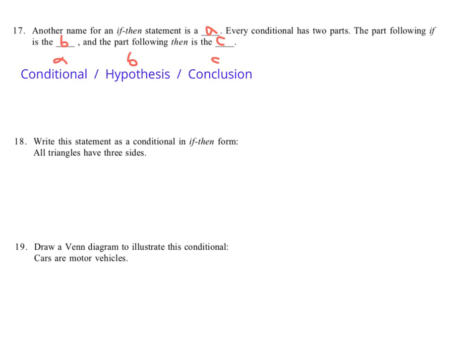Write this statement as a conditional in if-then form. All triangles - this is saying we know something to be true in all cases about triangles. All triangles have three sides. So you could write that as a conditional statement by saying, let me type it. If a figure is a triangle, then it has three sides.